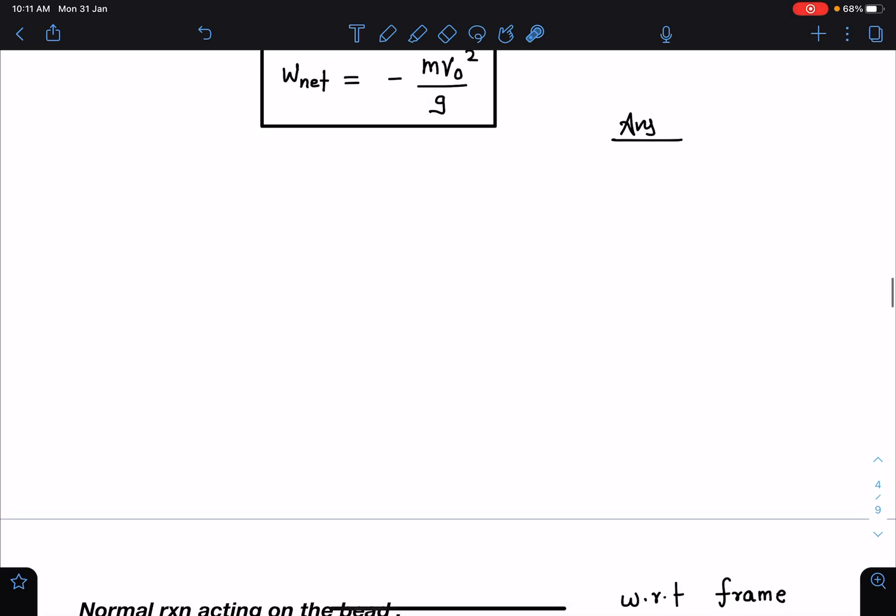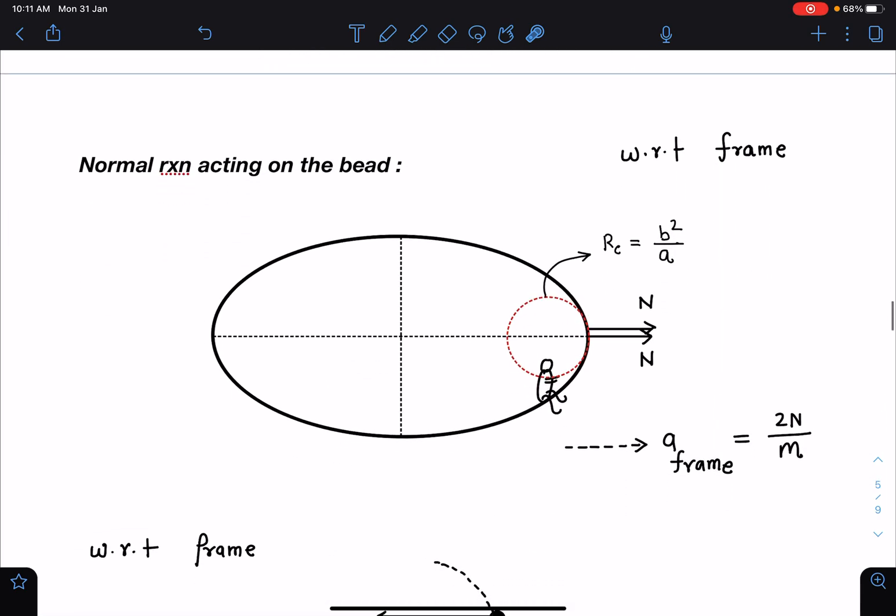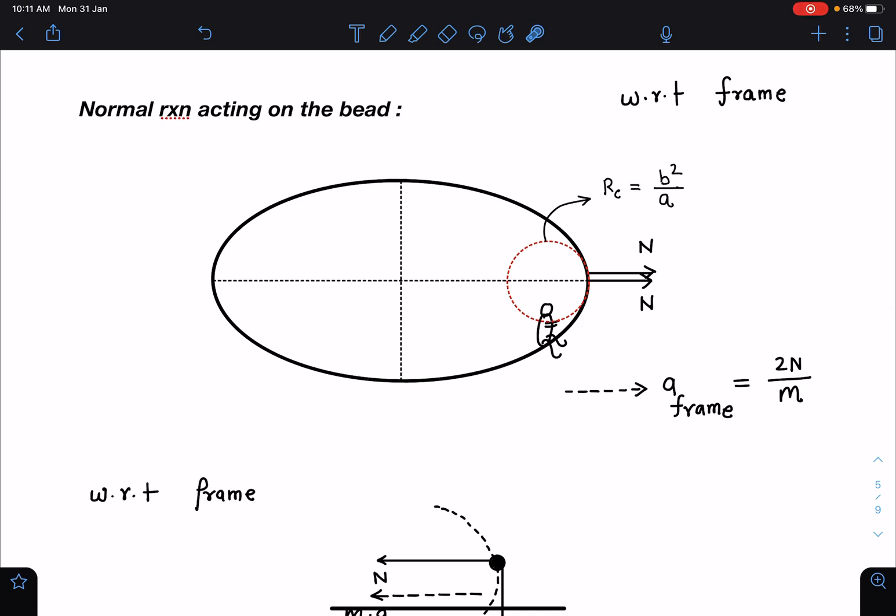Now this was expected because the force direction and displacement make an obtuse angle. So this is the answer we are calculating. Here also people are able to think and many people could answer it. This third part, very few were able to answer in the class.